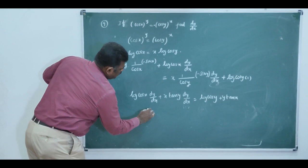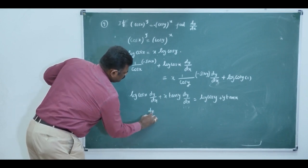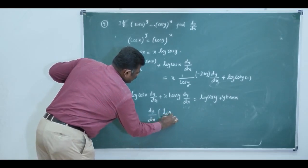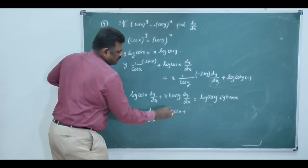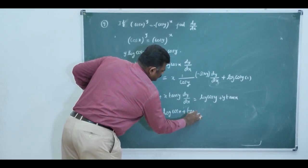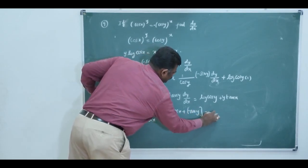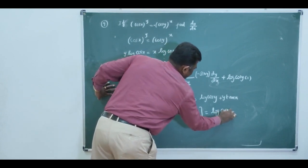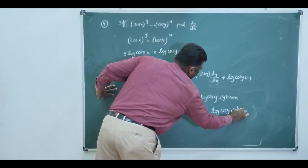Now, take dy by dx is common. So, dy by dx is common means log of cos x plus x tan y equal log of cos y plus y into tan x.